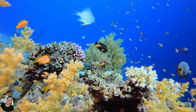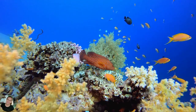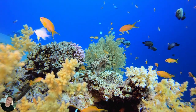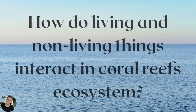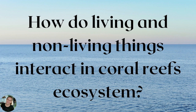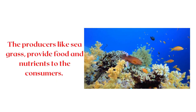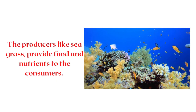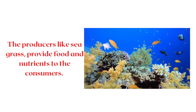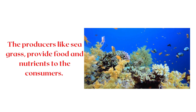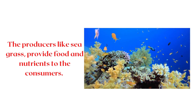Look at this video — this is an example of a marine ecosystem or coral reef ecosystem. You can see fishes, corals, and others. How do living things and non-living things interact in a coral reef ecosystem? The producers, like seagrass, provide food and nutrients to the consumers, which are the fish, the corals, the sponges, and others.